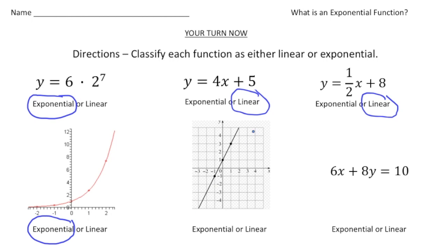This graph, it makes up a line, so that's linear. And last but not least, we have another function written in standard form, which means it's going to be linear. Alright, how'd you do?